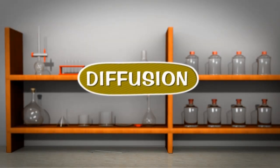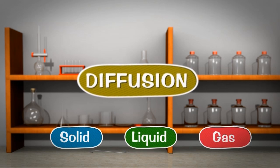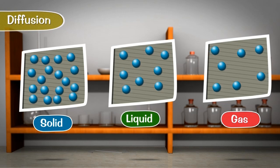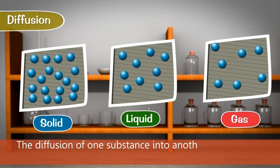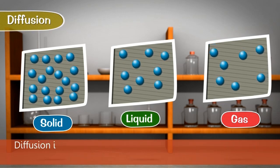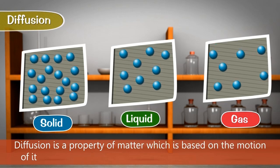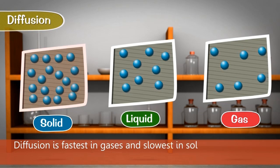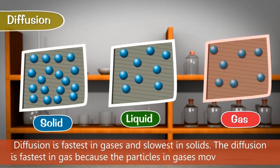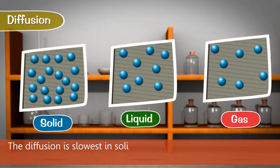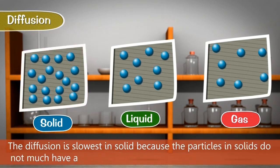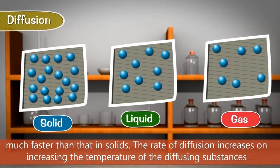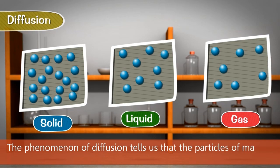Diffusion is the spreading out and mixing of a substance with another substance due to the motion of its particles. The diffusion of one substance into another goes on until a uniform mixture is formed. Diffusion is a property of matter based on the motion of its particles. Diffusion occurs in gases, liquids and solids. Diffusion is fastest in gases and slowest in solids, because particles of gases move very rapidly while particles in solids do not have much space. The rate of diffusion increases on increasing the temperature. The phenomenon of diffusion tells us that the particles of matter are constantly moving.